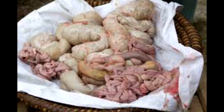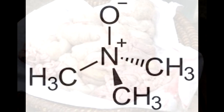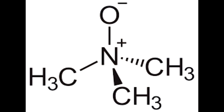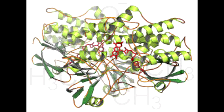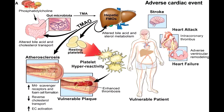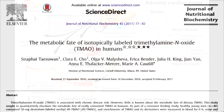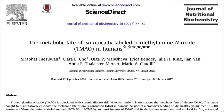TMAO is so deadly because the animal foods we consume are digested by your gut microbiota. The animal products are digested and then the altered bile acid and cholesterol transport makes fat platelets sticky, which ends up as plaque — as shown in the diagram here — leading to atherosclerosis and heart disease risk.